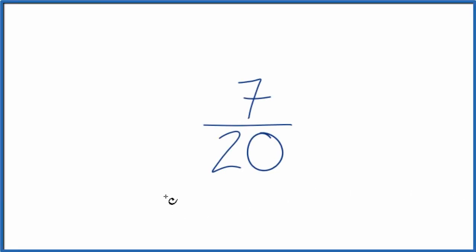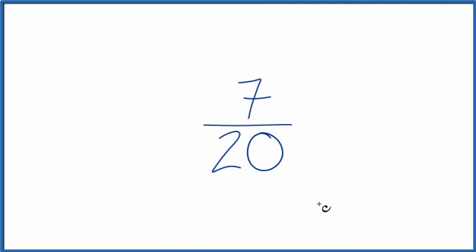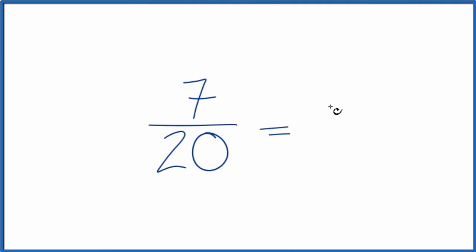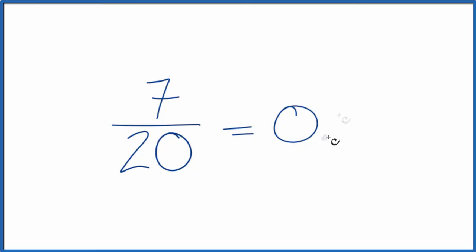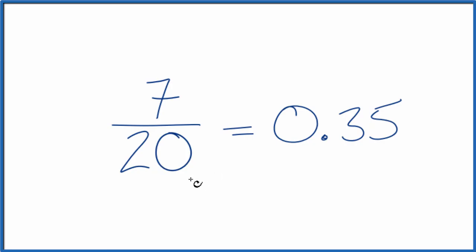Let's convert the fraction 7/20 to a decimal. We could just type 7 divided by 20 in a calculator, and we get 0.35. So that would be the decimal for the fraction 7 over 20.